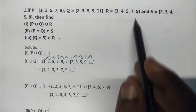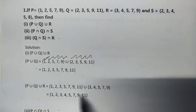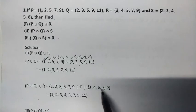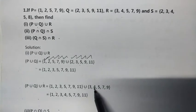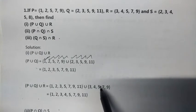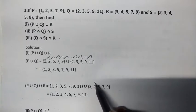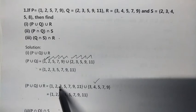Union R has 3, 4, 5, 7, 9. Three is already there, four we need to add. Five, seven, nine are already there. So the final answer is {1, 2, 3, 4, 5, 7, 9, 11}.